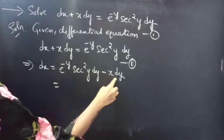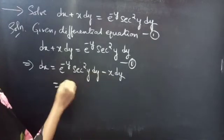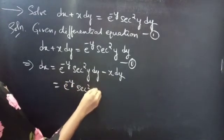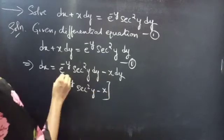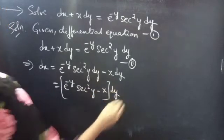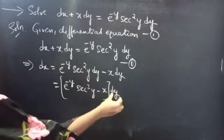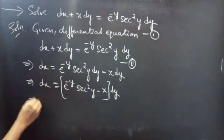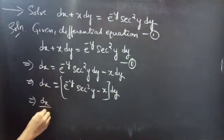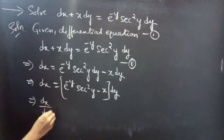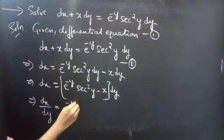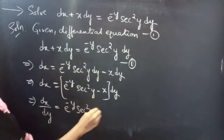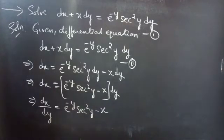Now let's take dy common from these two terms, and we get e power minus y secant square y minus x into dy. Now we can bring this dy to the LHS, and we will get dx by dy equals to e power minus y secant square y minus x.